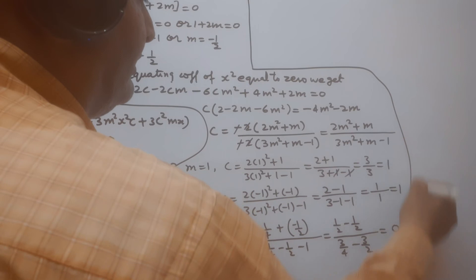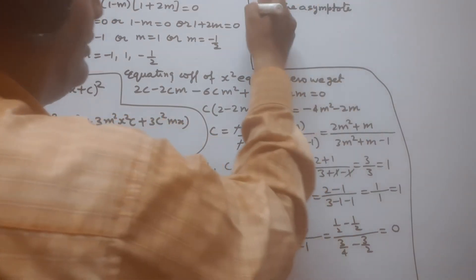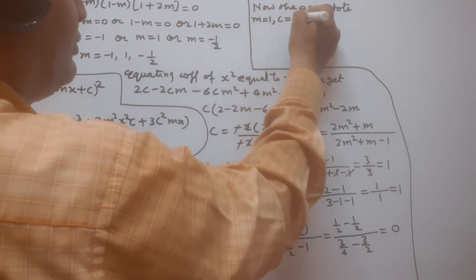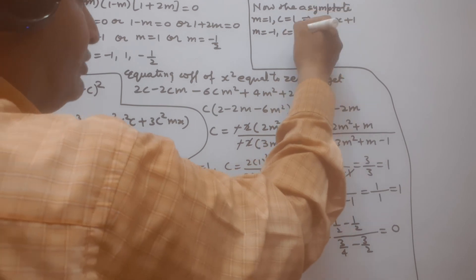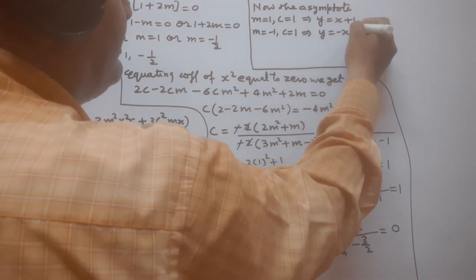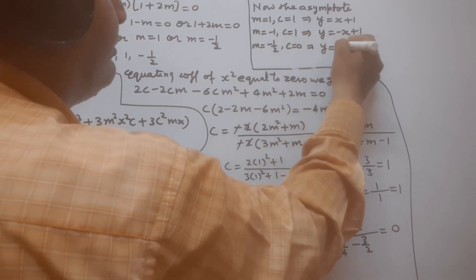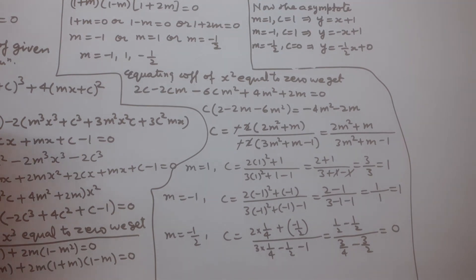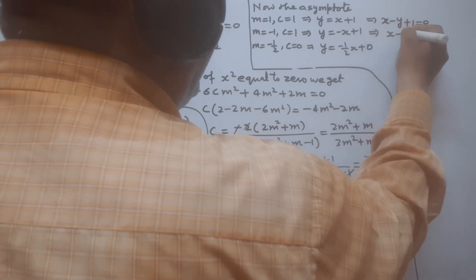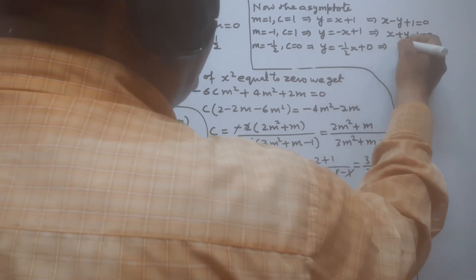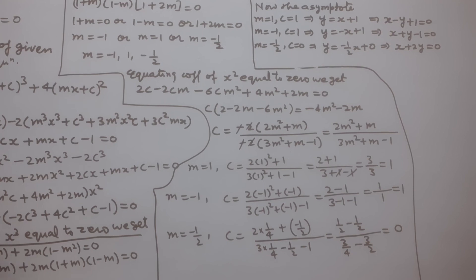The three asymptotes are: for m = 1 and c = 1, y = x + 1, i.e., x − y + 1 = 0; for m = −1 and c = 1, y = −x + 1, i.e., x + y − 1 = 0; for m = −1/2 and c = 0, y = −(1/2)x, i.e., x + 2y = 0. These are the three asymptotes of the given curve.